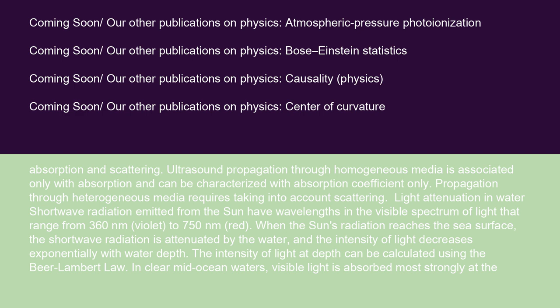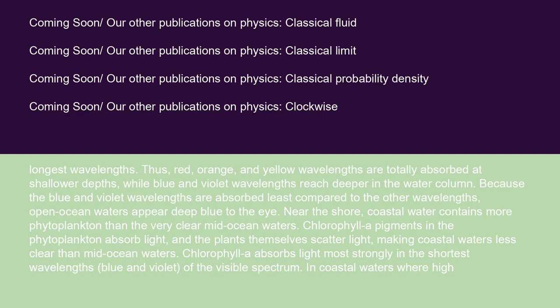Short-wave radiation emitted from the sun has wavelengths in the visible spectrum ranging from 360 nm (violet) to 750 nm (red). When the sun's radiation reaches the sea surface, the short-wave radiation is attenuated by the water, and the intensity of light decreases exponentially with water depth — calculable using the Beer-Lambert Law. In clear mid-ocean waters, visible light is absorbed most strongly at the longest wavelengths; thus, red, orange, and yellow wavelengths are totally absorbed at shallower depths, while blue and violet wavelengths reach deeper in the water column.